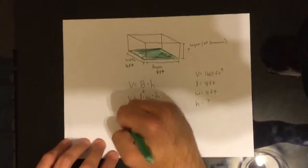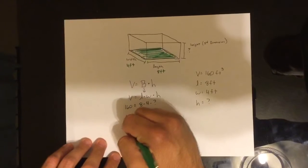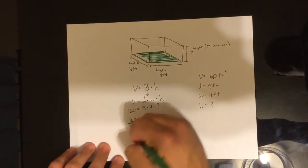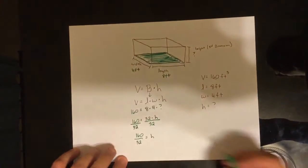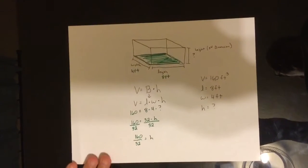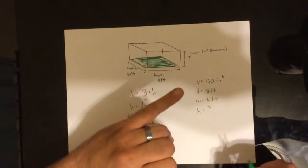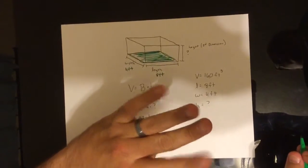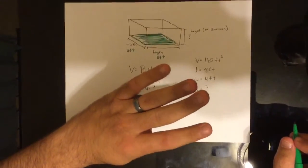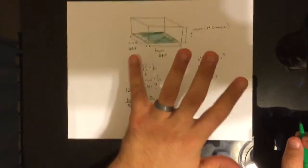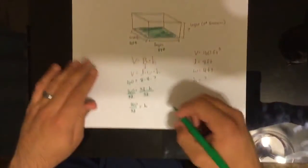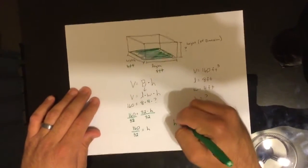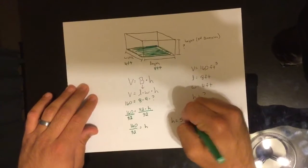So all we need to do here is 160 divided by 32 and it gives you the height. So let's see. Thirty-two, sixty-four, ninety-six, one twenty-eight, one sixty! Oh my god! How many fingers was that? Five! Good. So the height is 5 feet.